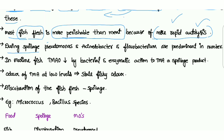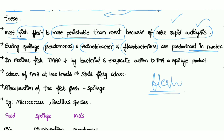During spoilage, Pseudomonas, Acinetobacter, and Flavobacterium are predominant in number. If we observe the flesh of fish, we can identify these microorganisms — Pseudomonas, Acinetobacter, and Flavobacterium — in spoiled fish.